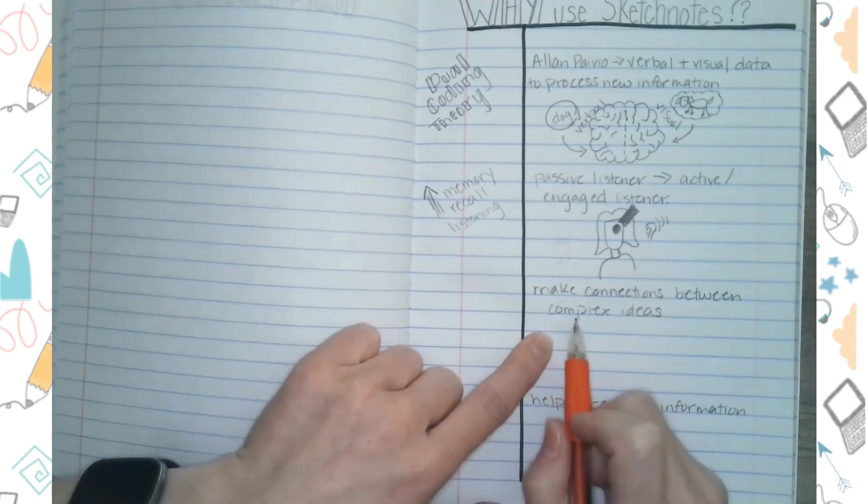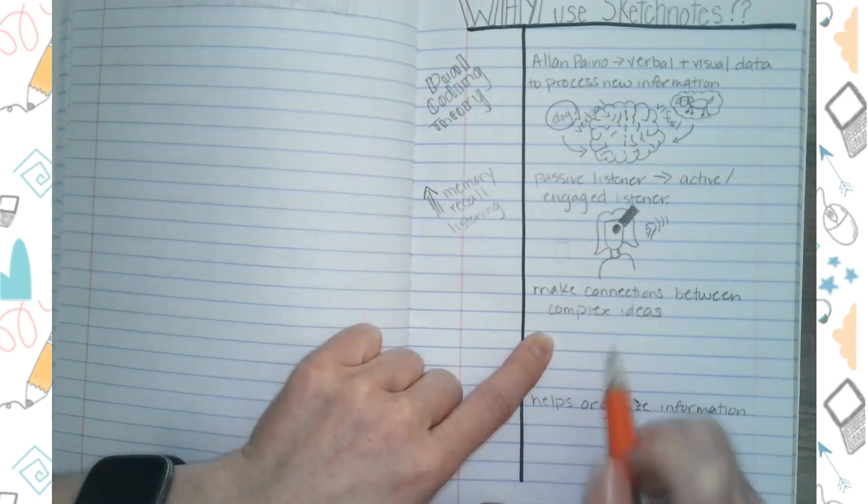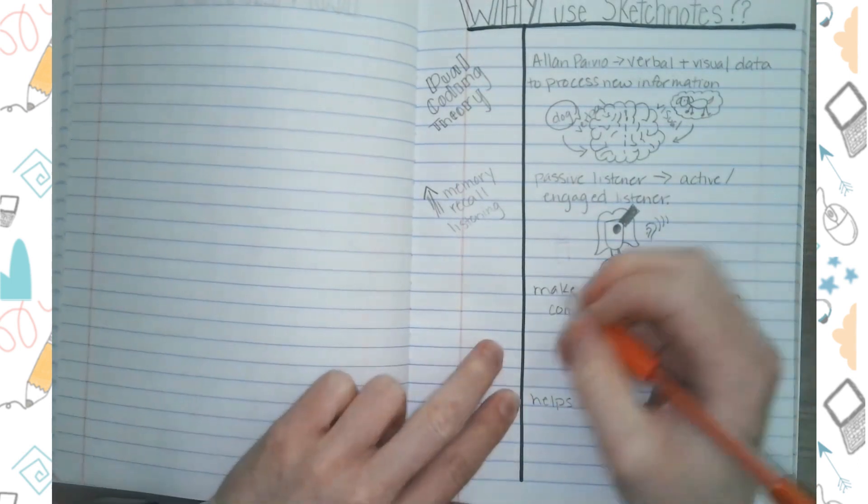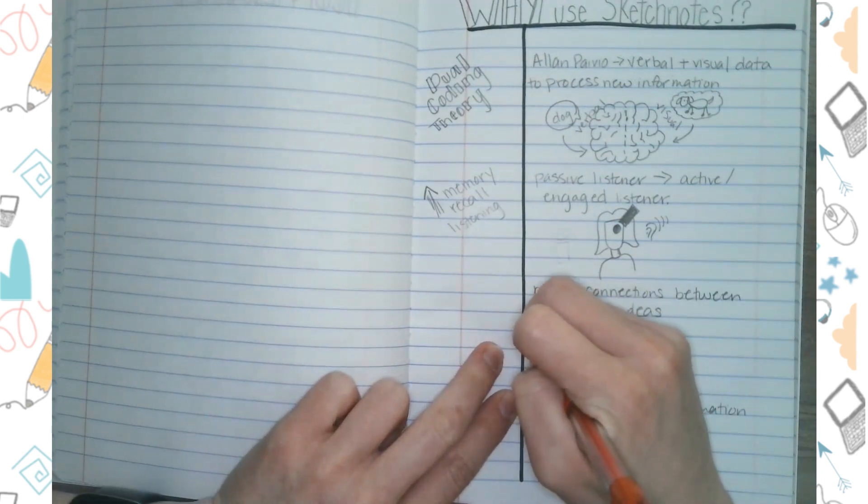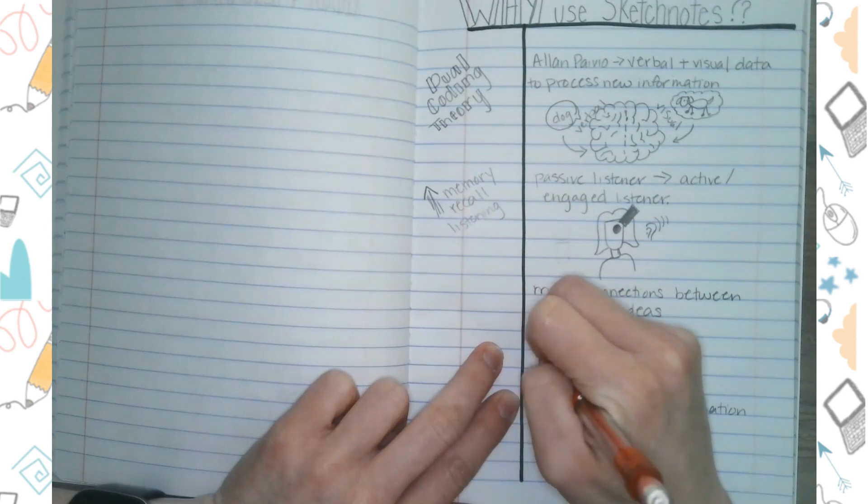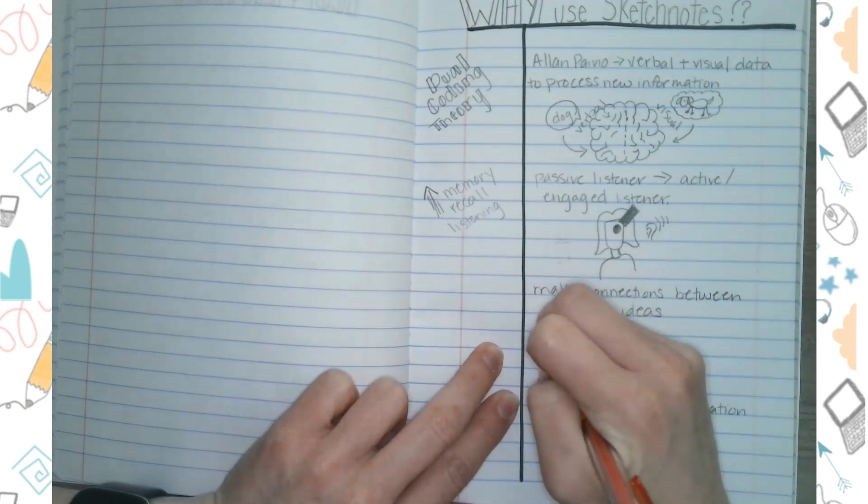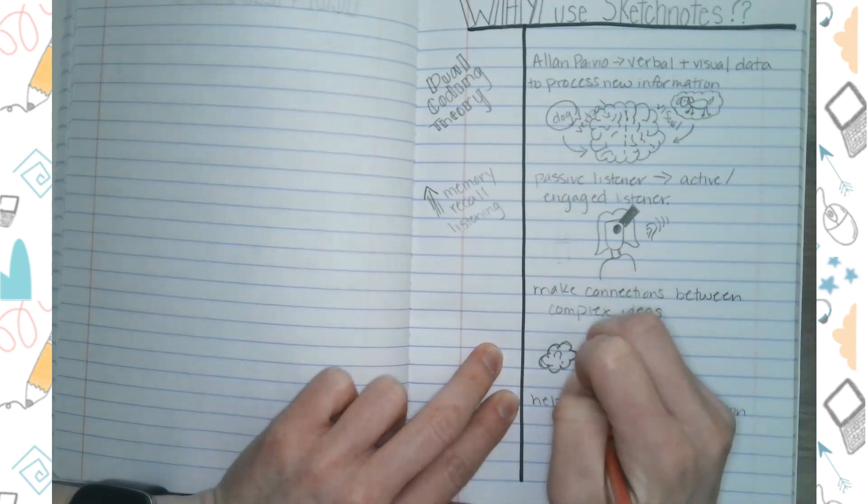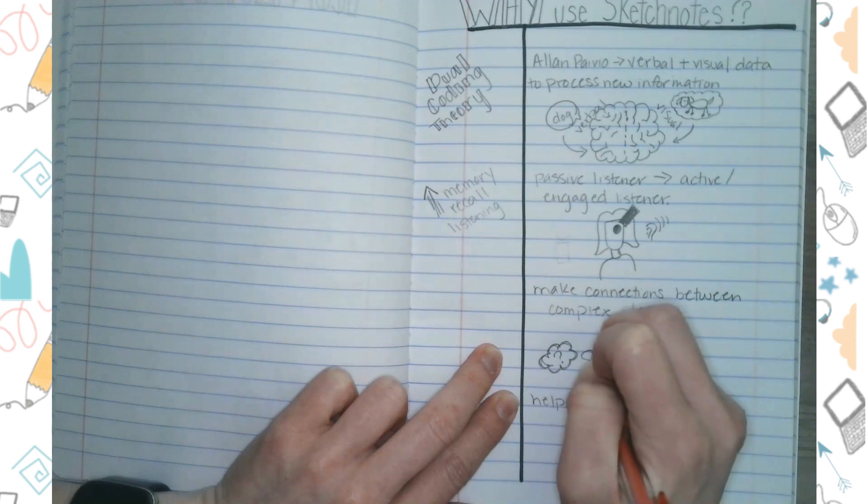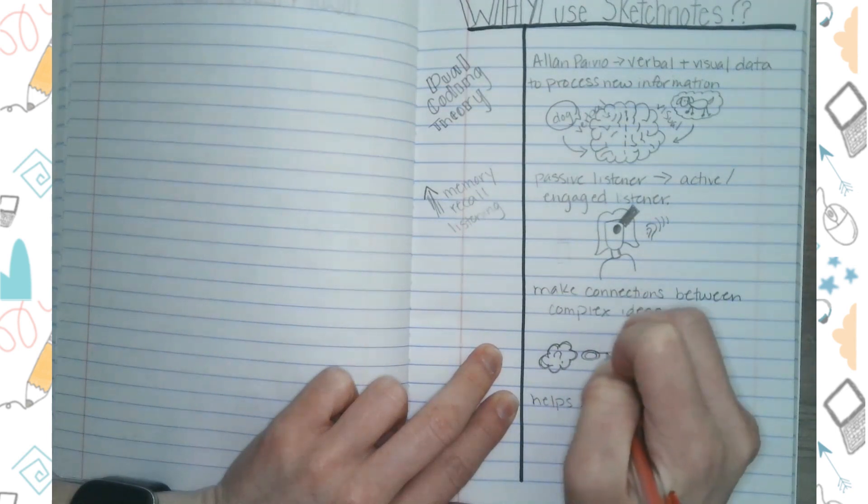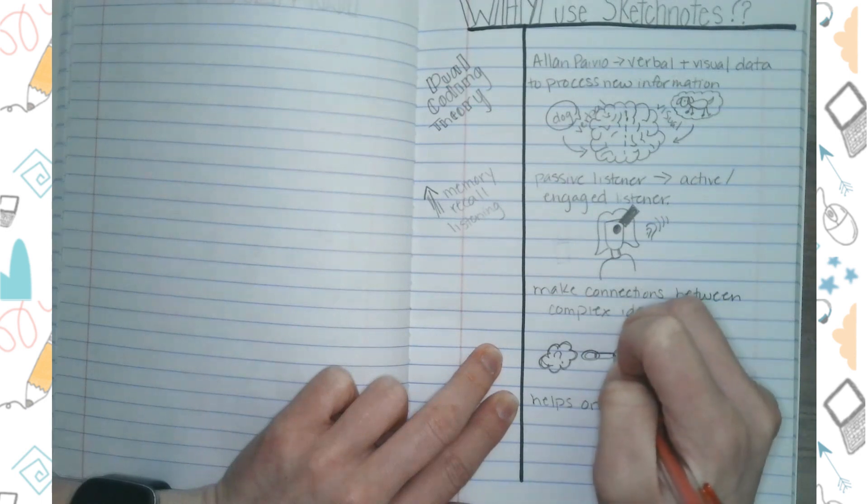The next reason we have to use sketchnotes is that it allows us to make connections between complex ideas. So I am going to doodle a thought bubble with a question mark inside of it, and then I am going to connect this idea, this thought bubble, with a chain link. So I'm making the physical connection between these two thought bubbles with this link.